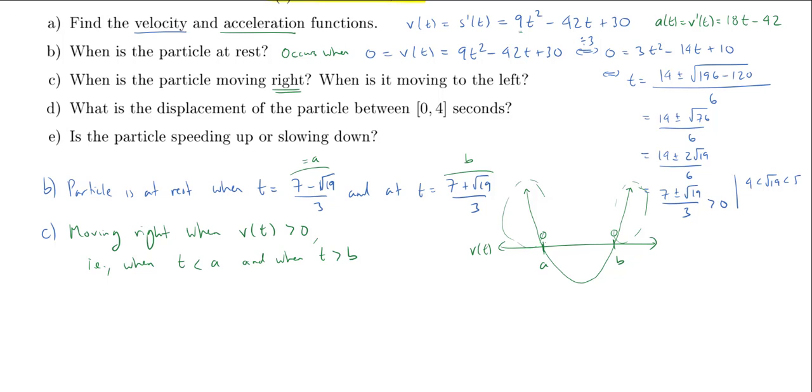So that tells me that the velocity is going to be positive before I get to A, so in this domain, and after I leave B. So I am moving right when T is less than A and when T is greater than B. And how about when I'm going to be moving to the left? Well, I'm moving left when the velocity is negative, and the velocity is going to be negative in the graph, in between A and B. So when the velocity is below the axis, when T is greater than A and T is less than B.